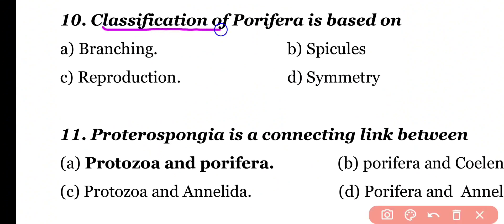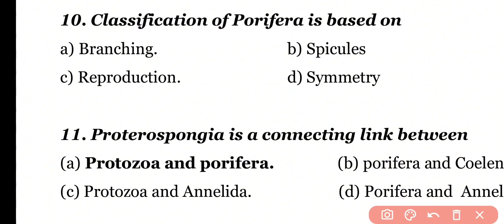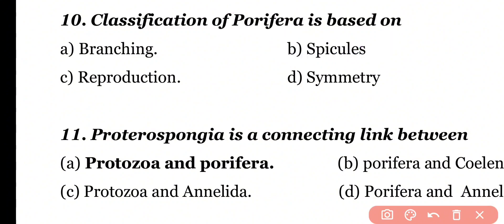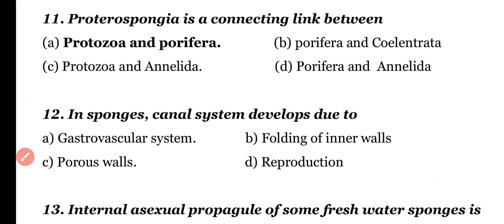Question number 10. Classification of phylum porifera is based on: branching, spicules, reproduction, or symmetry. Correct answer is option B. Classification of phylum porifera is based on the presence of spicules.